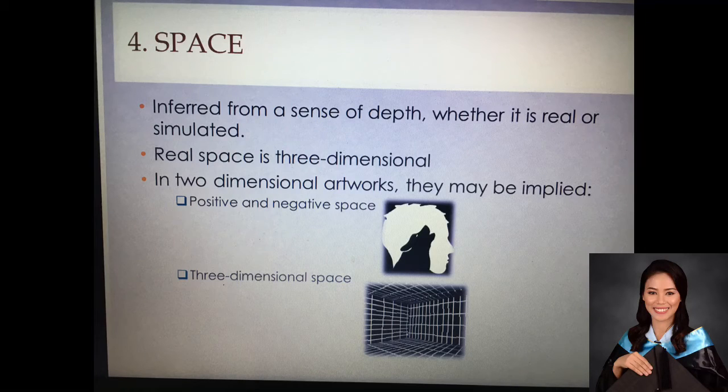Let's move on to the fourth element, which is space. Related to shape and form is space. It is usually inferred from a sense of depth, whether it is real or simulated. Real space is three-dimensional. Like what has been previously mentioned, sculptures are a perfect example of artworks that bear this element. However, not all works are sculptures.